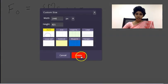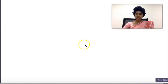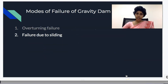This is the second type of failure: failure due to sliding. Sliding occurs when horizontal forces exceed the resistance force.